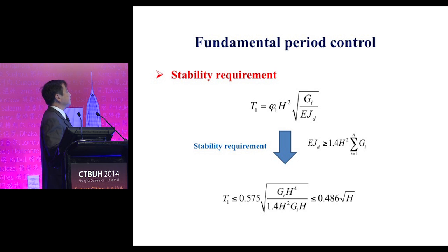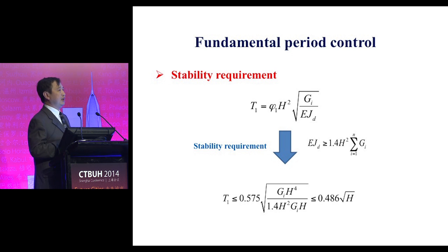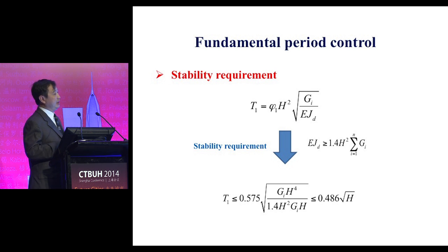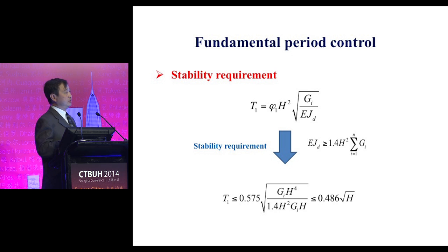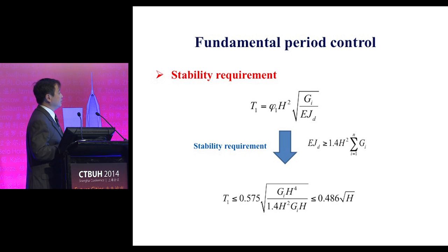We also give second-order and third-order period ranges. Now we always talk about big data and getting conclusions from data — we find the relationship may follow the square root of H. But we still want to know why, so we take a look at our code and its requirements on stability.